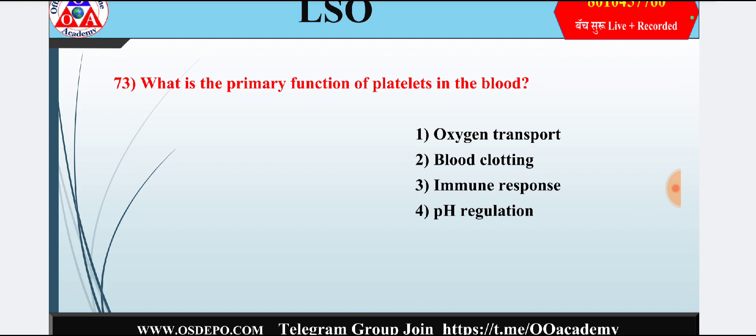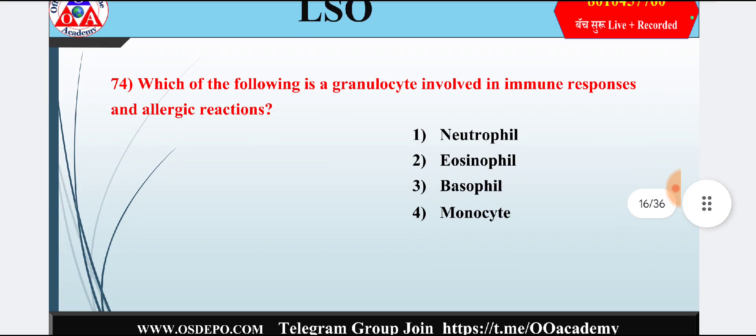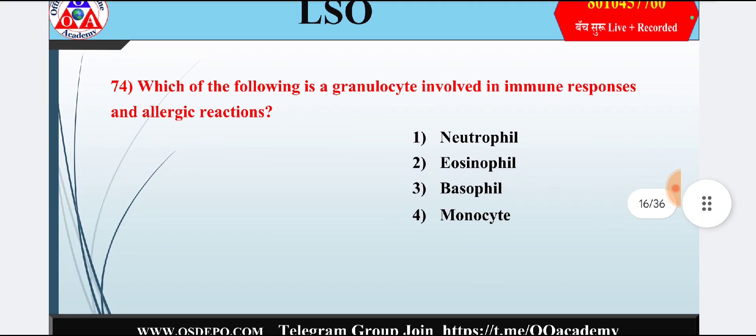Question 13: What is the primary function of platelets in the blood? Option 1: oxygen transport; option 2: blood clotting; option 3: immune response; option 4: pH regulation. Answer is option 2 — blood clotting.